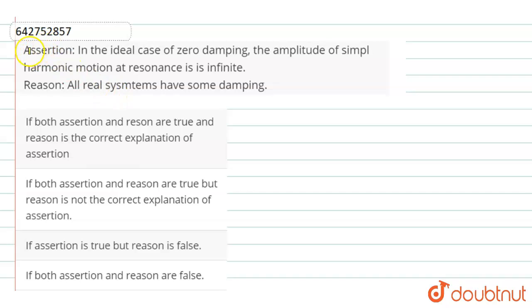Hello dear students, there is an assertion and reason type of question. The statement of the assertion is in the ideal case of zero damping, the amplitude of simple harmonic motion at resonance is infinite. And the reason is all real systems have some damping.